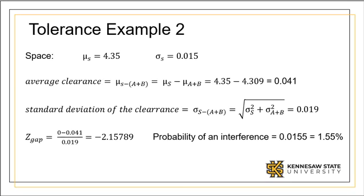Suppose the two parts from example 1 have to fit in a space that has a mean of 4.35 and a standard deviation of 0.015. We first find the average clearance by subtracting the means.